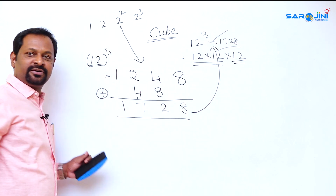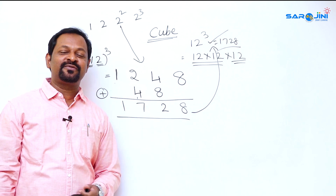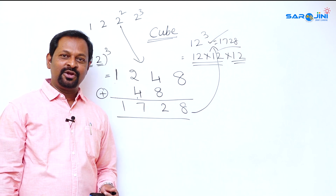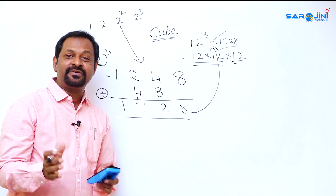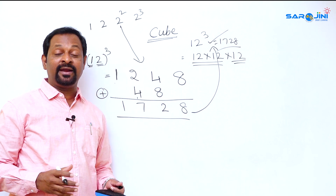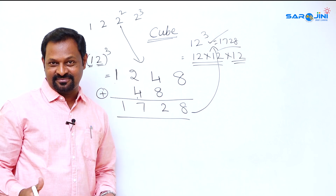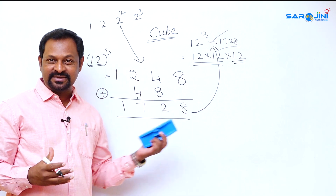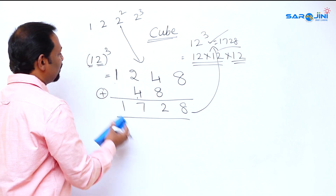So we got 1728, which matches the traditional method. In this way you can reduce a lot of time in calculation and feel comfortable doing cubes. Let's take one more example.